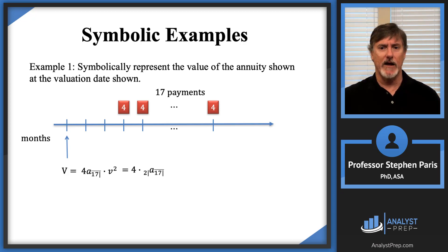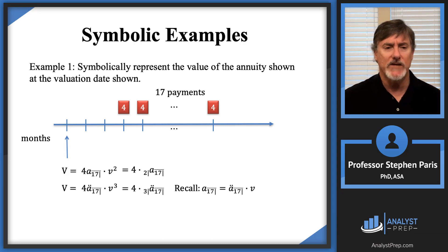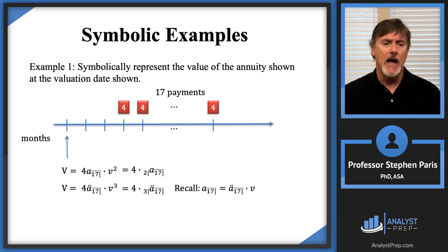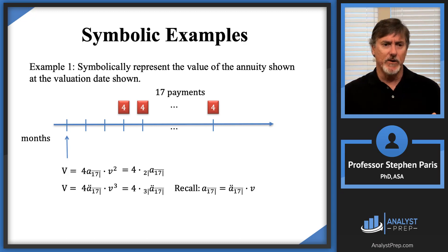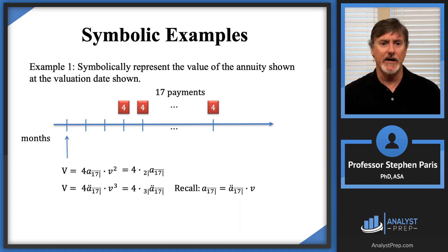Let's look at the expressions we have. We have four times A-angle-17 times V-squared, and also four times A-double-dot-angle-17 times V-cubed. The reason those two give the same answer is because A-angle-17 equals A-double-dot-angle-17 times V. In the first expression, substituting A-double-dot-angle-17 times V for A-angle-17, then grouping that V with V-squared, you end up with the second expression.